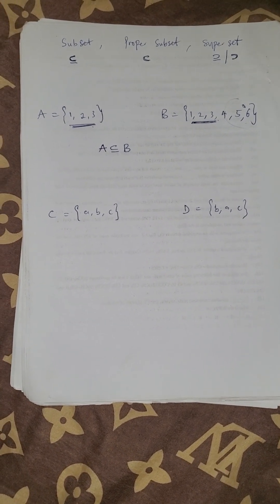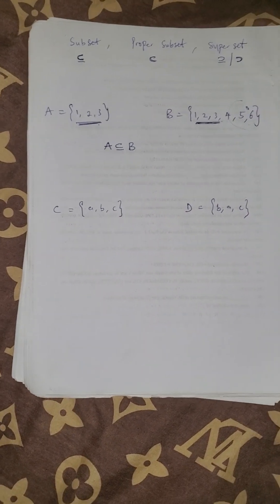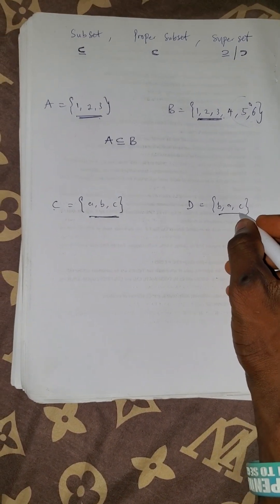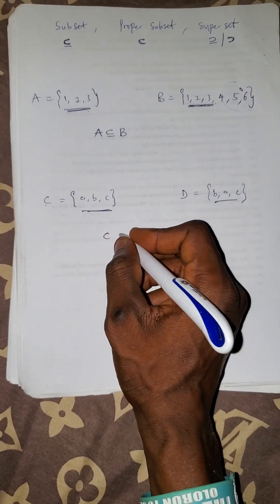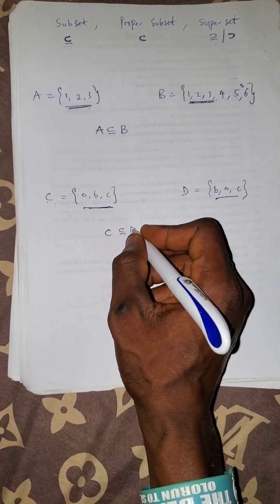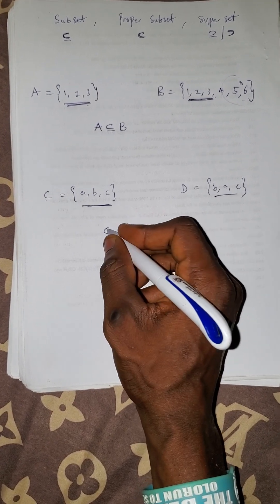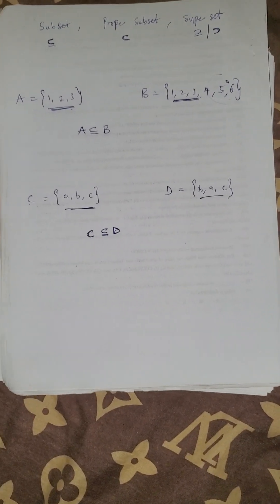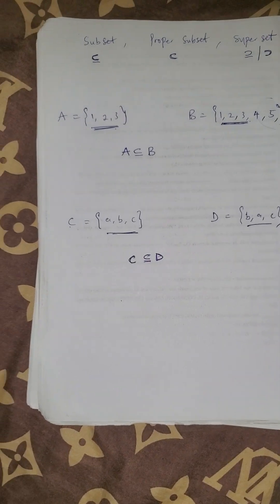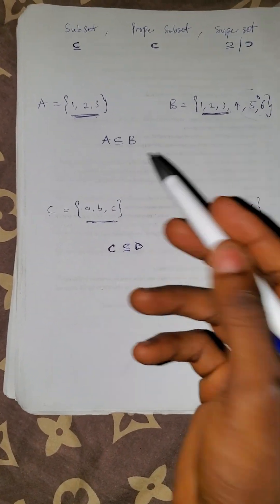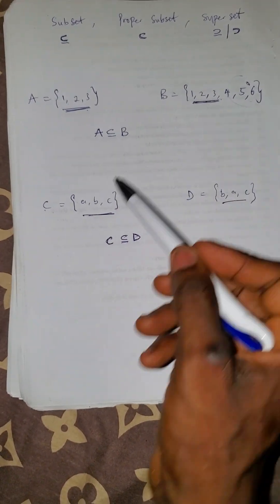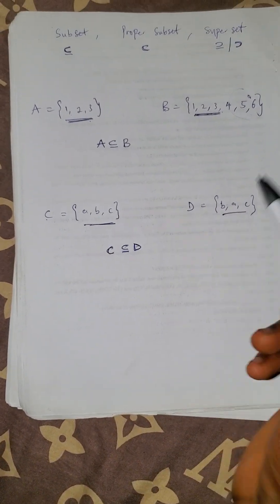Now if you check this example, you observe that all the elements of C can be found in D. The same logic applies — C is a subset of D. And similarly, A is a subset of B because all the elements of A can be found in B. The same thing: C can be found in D.